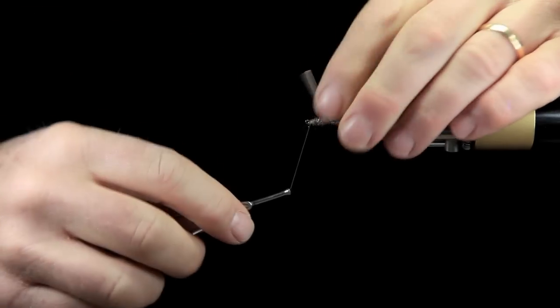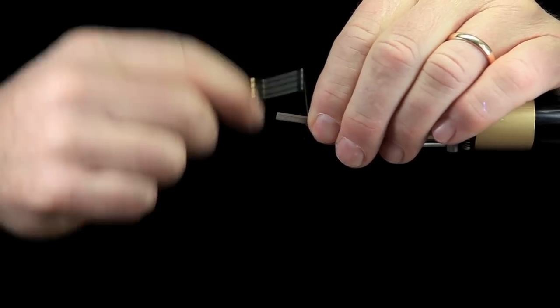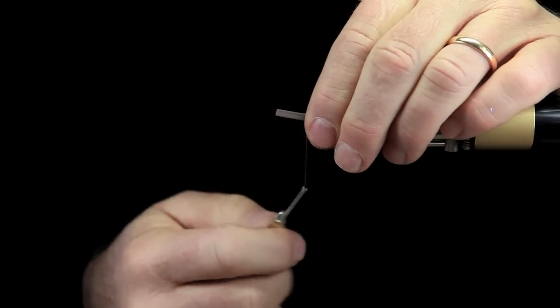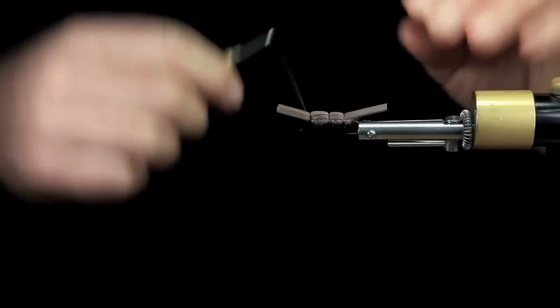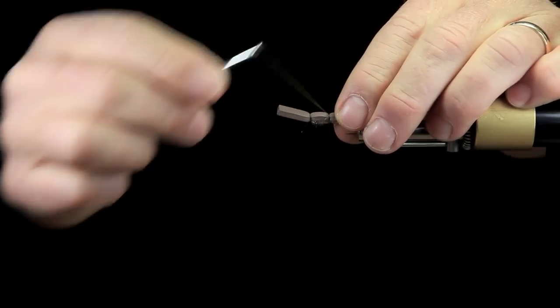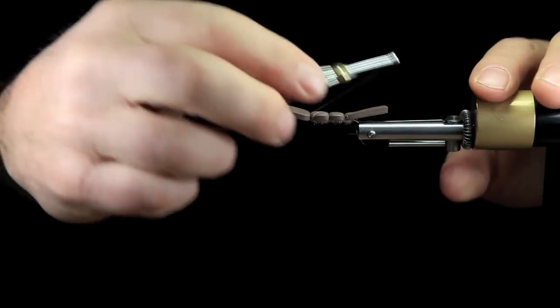Go to the head, tie it off. Cross over here, just makes it easy. Cross back over, make a little X.